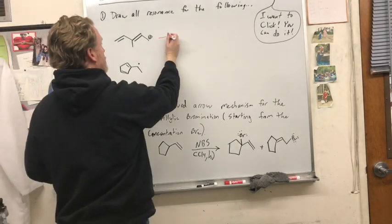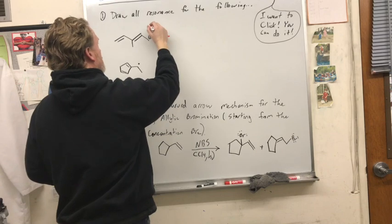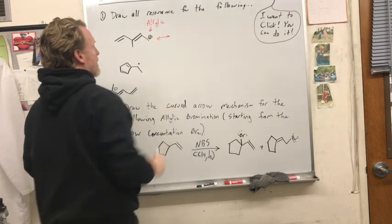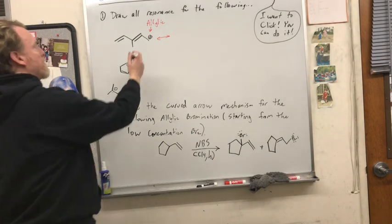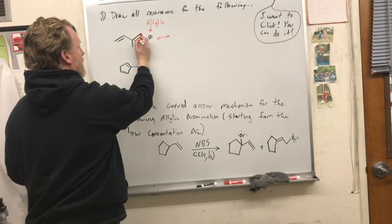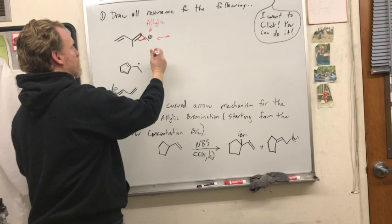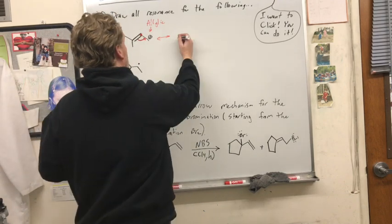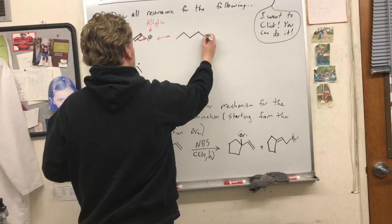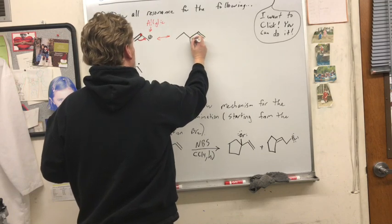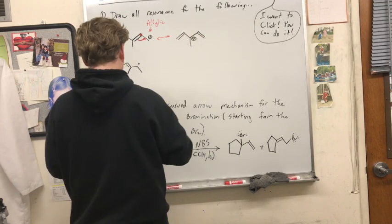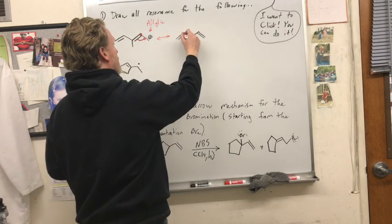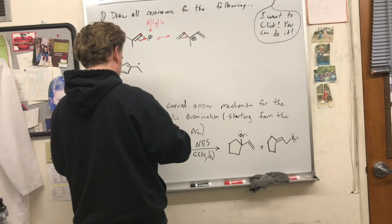The resonance for this one is the following. That's definitely allylic — that carbocation there. If you imagine a hinge there, we've got our hinge and it's going to swing over. Then we'll have the carbocation in the middle. Next, I will have a hinge here and swing that over that way.